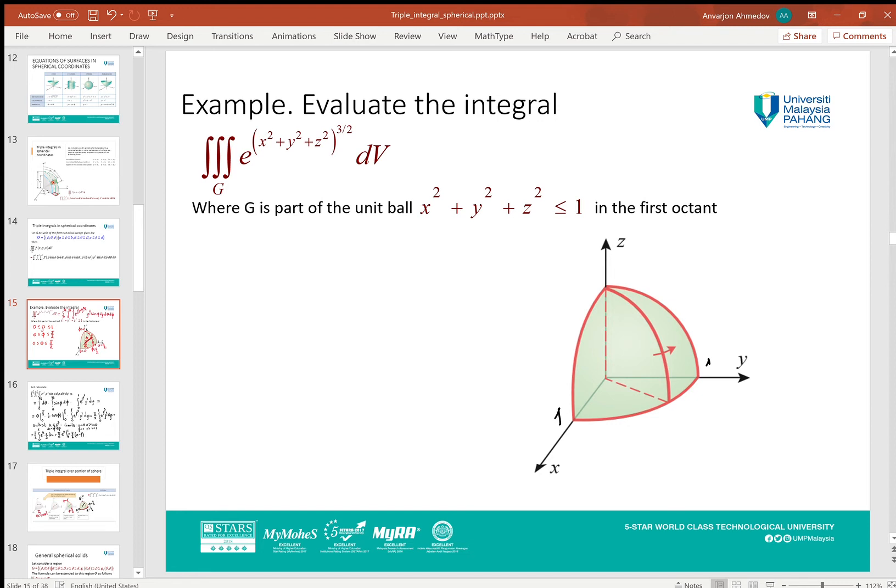that means ρ will be changing from 0 to 1. And another variable φ will be from 0 to π/2, because when we touch the z-axis, φ will be 0, and we change until the xy-plane, φ will be π/2. θ, because of the first